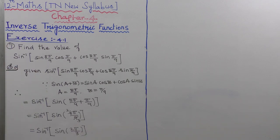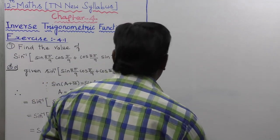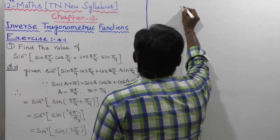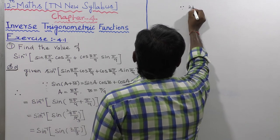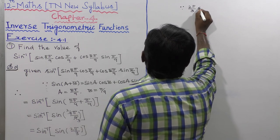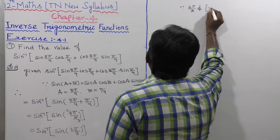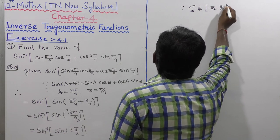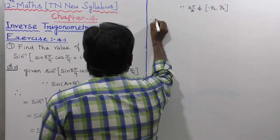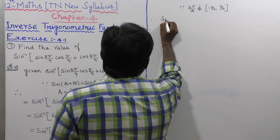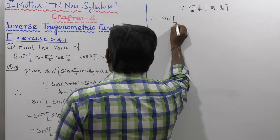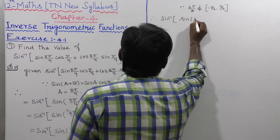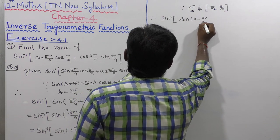Now, 2π/3 is not in the range of sin inverse, since it does not belong to the interval [−π/2, π/2]. Therefore, we rewrite it as sin inverse of sin(π − π/3).